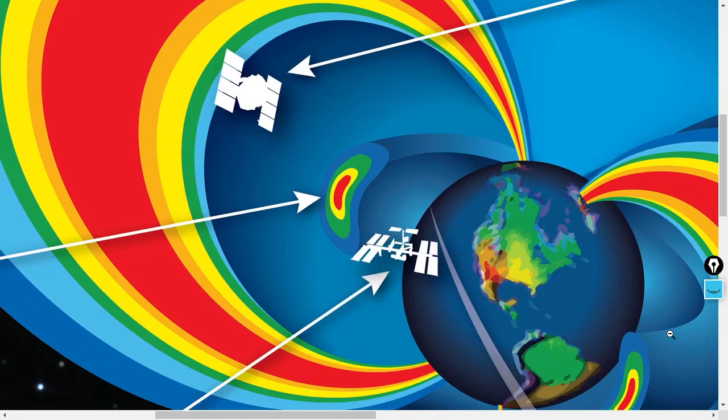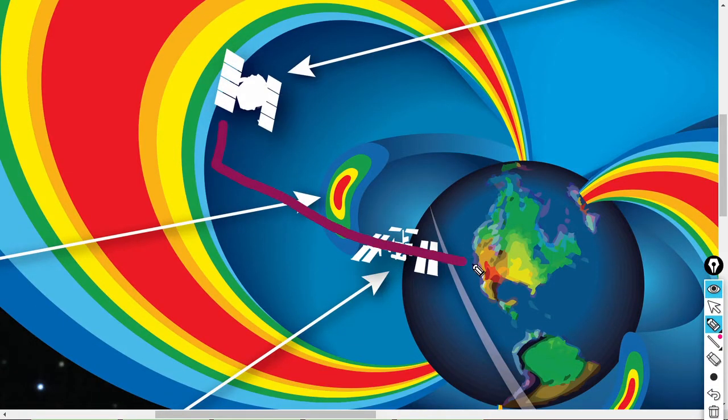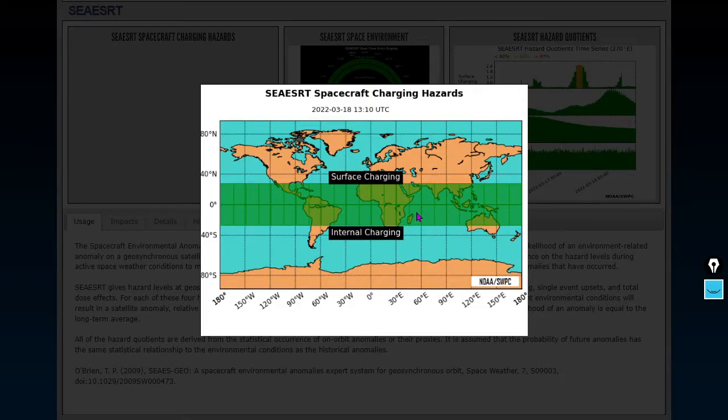And again, that is the total electron content in between your GPS satellite and your handset. It must communicate through a couple of plasmaspheres, the ionosphere, and the Van Allen belt - the inner Van Allen belt. So we don't see any charging hazards at the moment. That's a good thing.